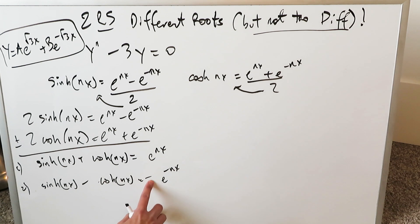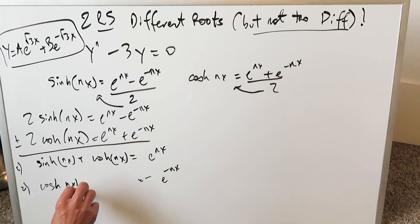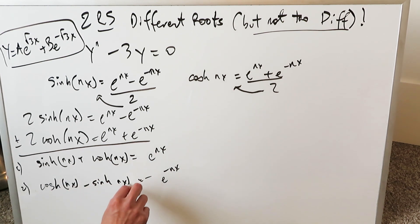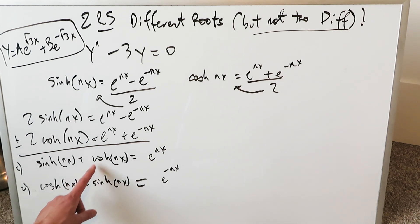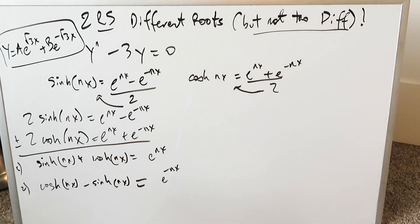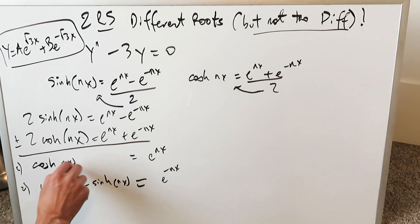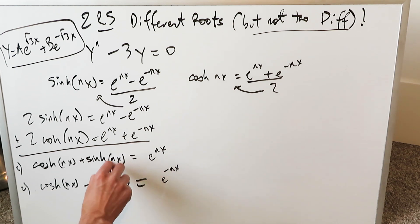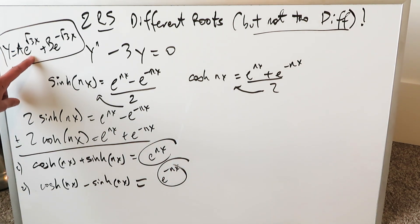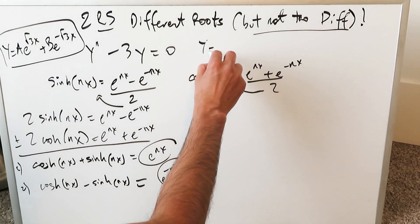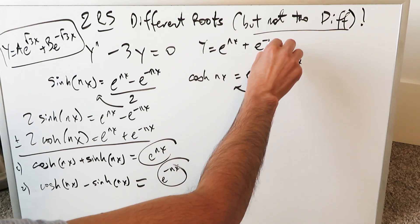We can now shuffle things around. Taking the minus to the other side flips the equation, giving: hyperbolic cosine nx minus hyperbolic sine nx equals positive e to the minus nx. Switching the order around the positive sign in equation one gives: hyperbolic cosine nx plus hyperbolic sine nx equals e to the nx. Now we have two equations that look like the representative form y equals e to the nx plus e to the minus nx.